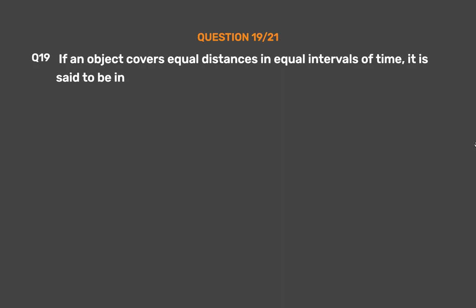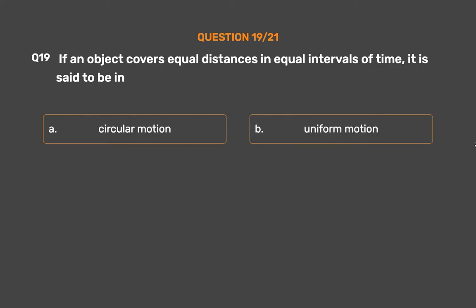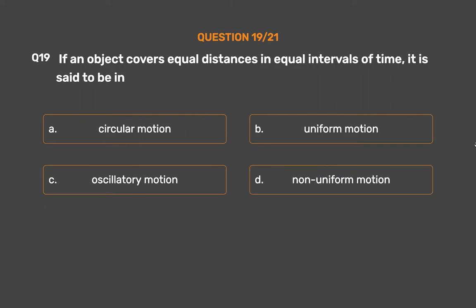Question No. 19. If an object covers equal distances in equal intervals of time, it is said to be in: Option A: Circular motion. Option B: Uniform motion. Option C: Oscillatory motion. Option D: Non-uniform motion.